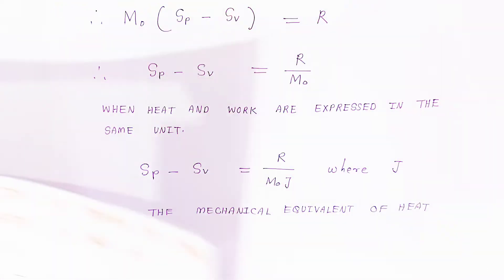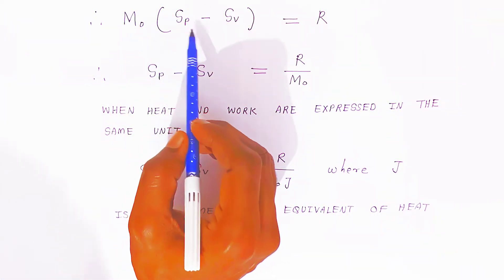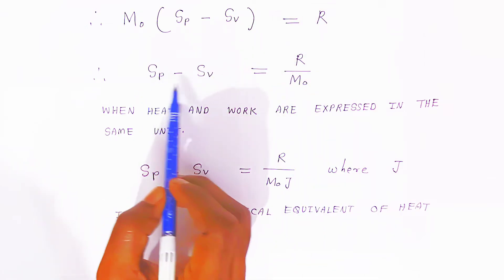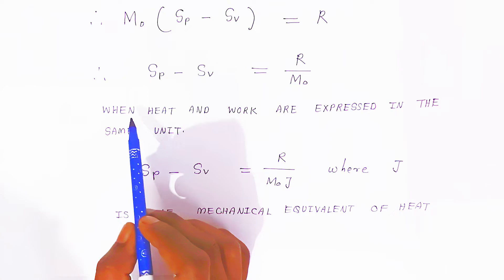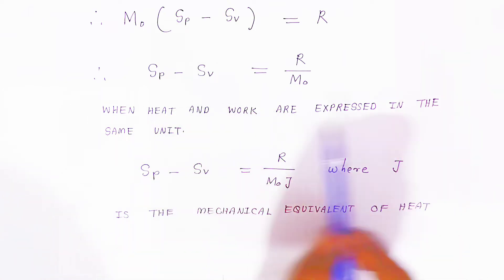Now, take M0 outside: M0(Sp minus Sv) equals R. Then, Sp minus Sv equals R/M0. When heat and work are expressed in the same unit, you have to use this formula.